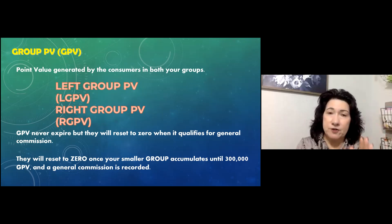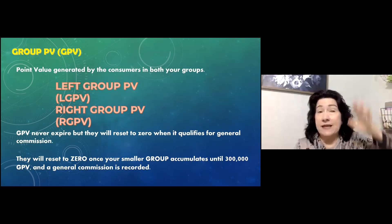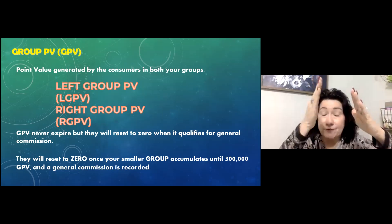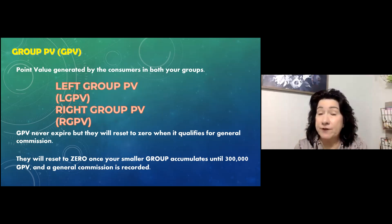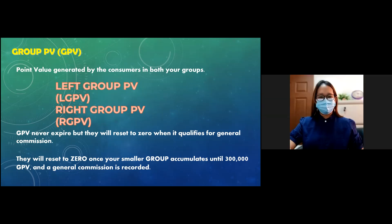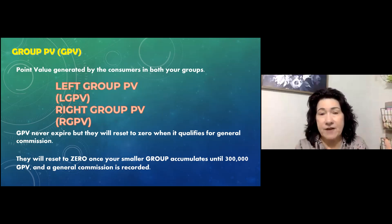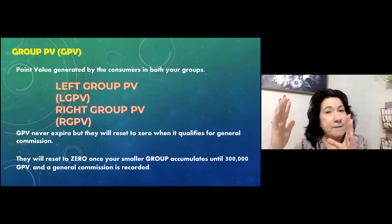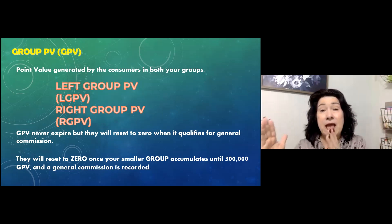Your left leg could generate a million points quickly because it's longer, while you're still building your right. But even if you have a million points on the left, your right side has to hit 300,000 before you get your commission — then both reset. Unlike many companies where points reset at month-end no matter how close you are, this doesn't happen here. If it's October 31st and you're halfway to commission on your right, it won't reset to zero tomorrow — it stays exactly as is.